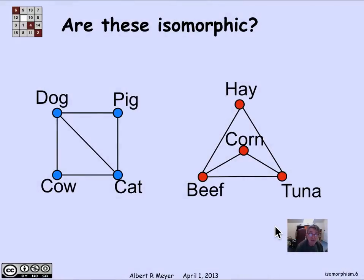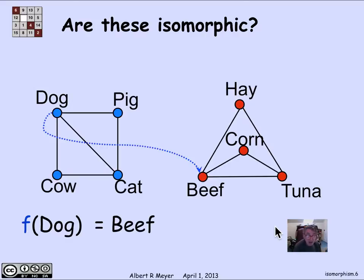Here are two graphs, and I claim that they are isomorphic. On the left, we've got a bunch of animals: dog, pig, cow, cat. And on the right, we have a bunch of animal foods: hay, corn, beef, tuna. And it's a hint on how we're going to do the matching. So I'm going to tell you that the dog vertex on the left corresponds to the beef vertex on the right. I'm defining a function — a bijection — from the vertices on the left in blue to the vertices on the right in red. And f of dog is beef.